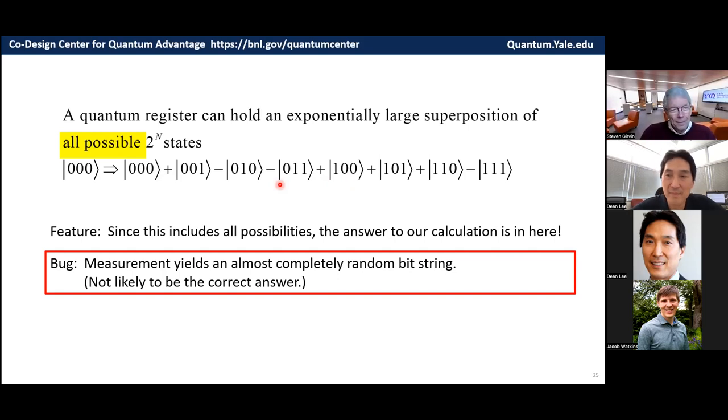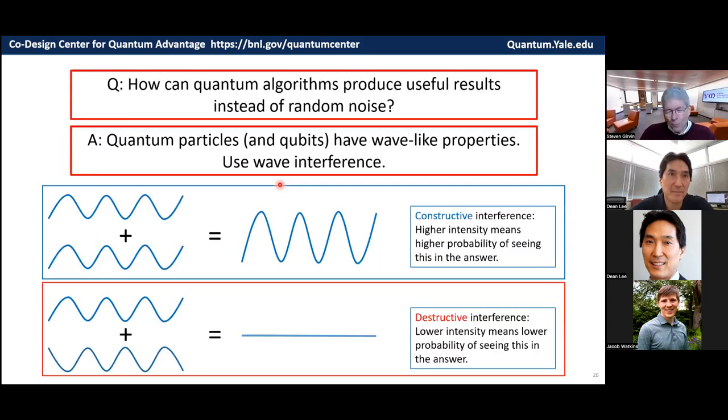So, we need some way to build a quantum algorithm that will fix that problem and quantum algorithms. So how do they produce useful results instead of random results? Like I just showed you, well, quantum particles have wave-like properties. As I told you,